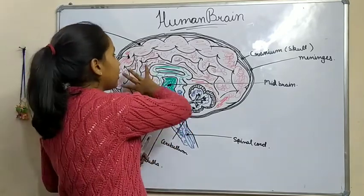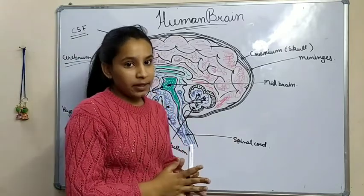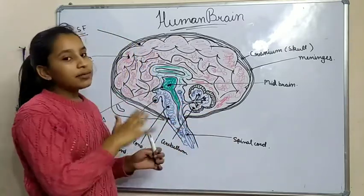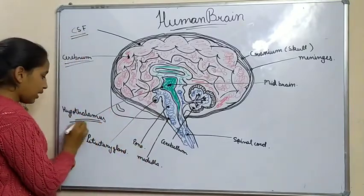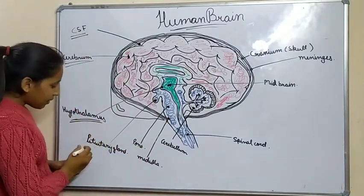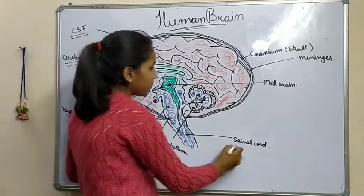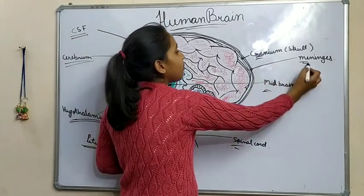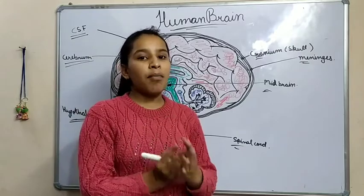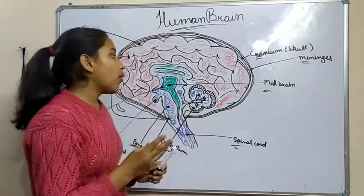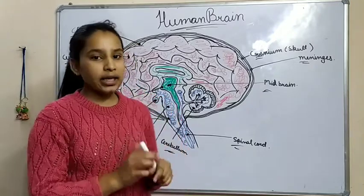Cerebrum is present in the largest part of our brain. The brain has three main important parts: forebrain, midbrain, and hindbrain. Forebrain I have indicated with red color, midbrain with green color, and hindbrain with blue color. The largest part of the brain is the forebrain, this small part is the midbrain, and this is the hindbrain.